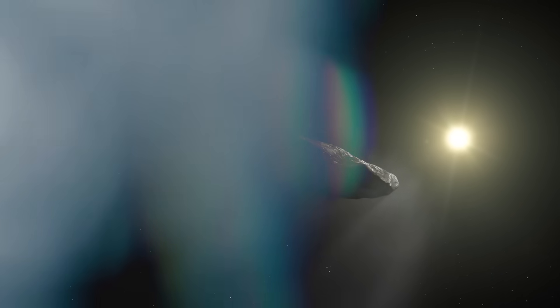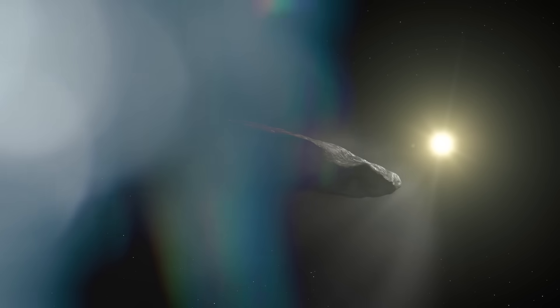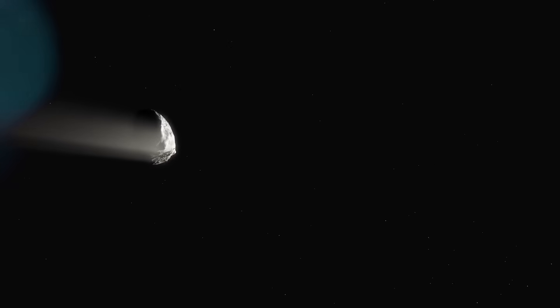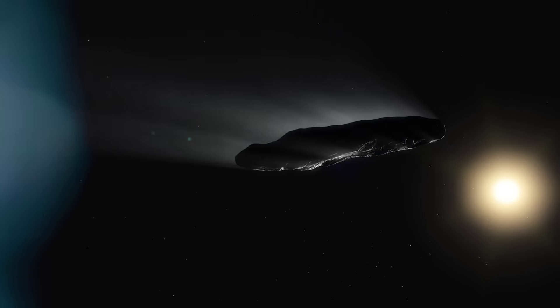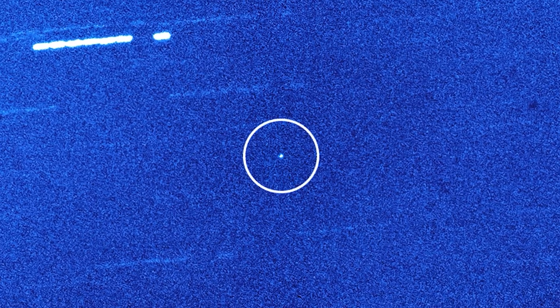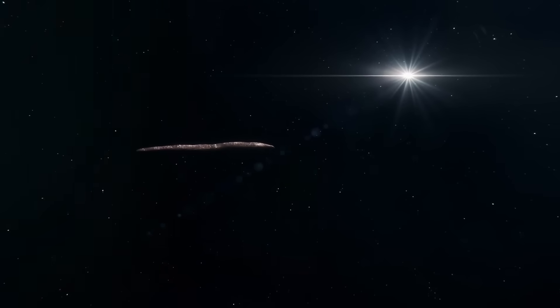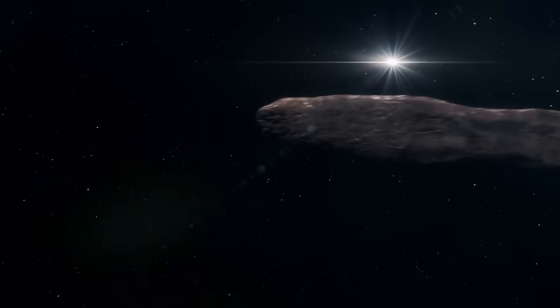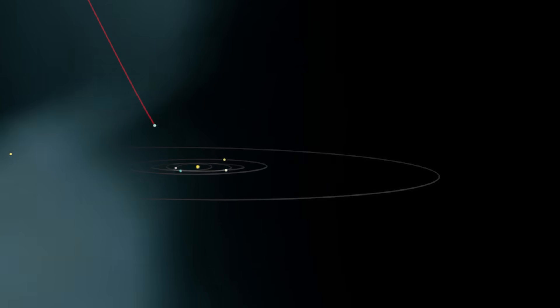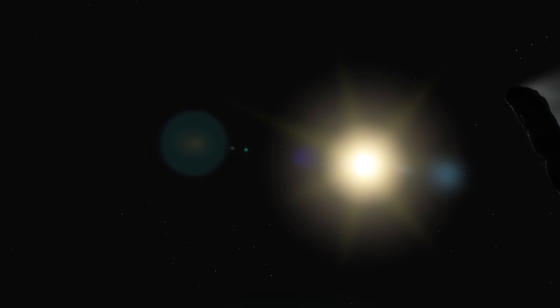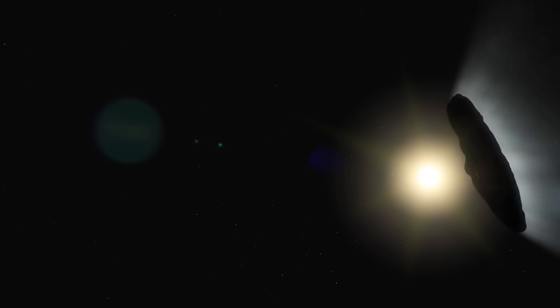As public excitement grew, a new kind of silence began to settle in. Agencies that initially released trajectory data and light curves, NASA, ESA, and India's ISRO, suddenly pulled back. Mission pages stopped updating. Observational timelines vanished. Requests for raw Webb data were denied, citing internal review. FOIA requests submitted by journalists returned heavily redacted documents. And whispers began to leak from inside. Observatory researchers pulled from teams, specialists reassigned, access to telescope feeds quietly restricted.